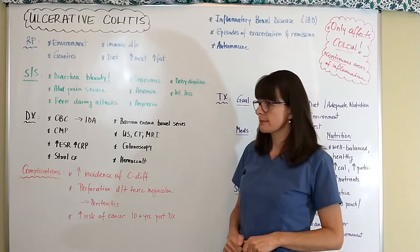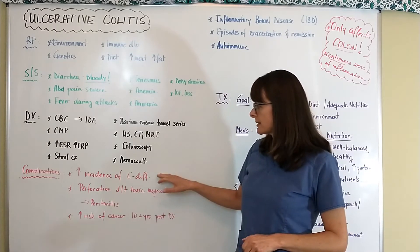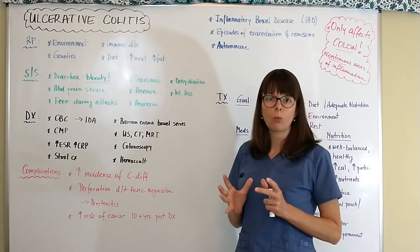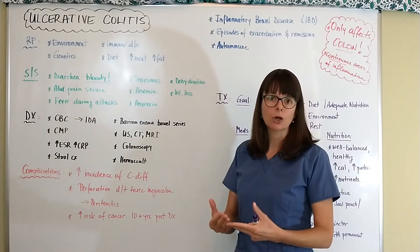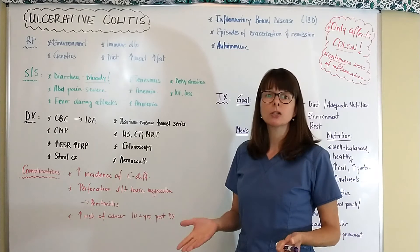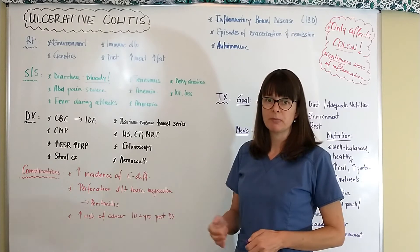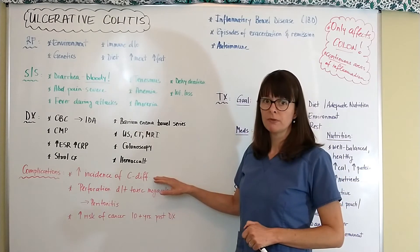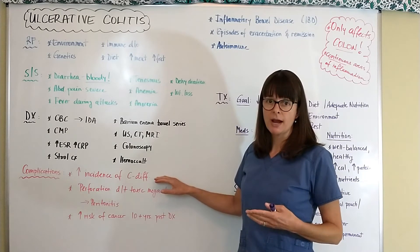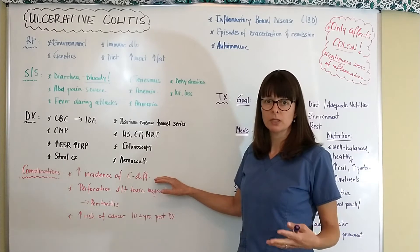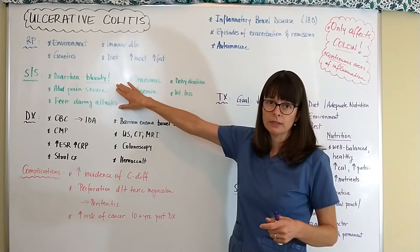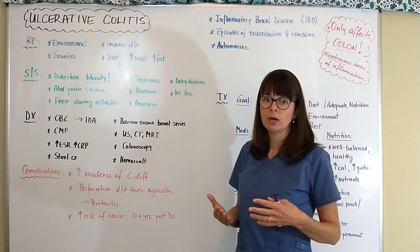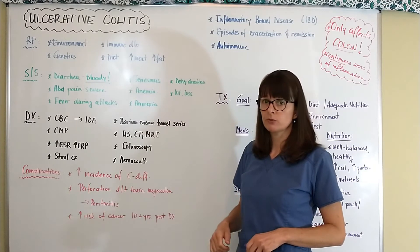Complications of ulcerative colitis include an increased incidence of C. diff, because the inflamed colon wall disrupts normal gut bacteria. C. diff is basically an overgrowth of harmful gut bacteria, and these infections cause additional diarrhea — a mucus, green, malodorous stool — on top of the existing bloody diarrhea. This puts patients at very high risk for fluid and electrolyte imbalances.